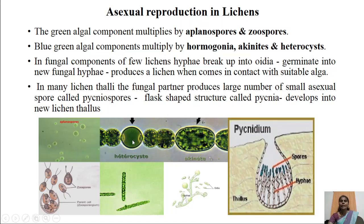Heterocysts are specialized cells provided with polar nodules. In terminal heterocysts there is only one polar nodule, whereas in intercalary heterocysts two polar nodules are present. These hormogonia are formed at the region of heterocysts so that they can easily break, and the broken filaments, when they come in contact with fungal hyphae, develop into new individual lichen thalli.